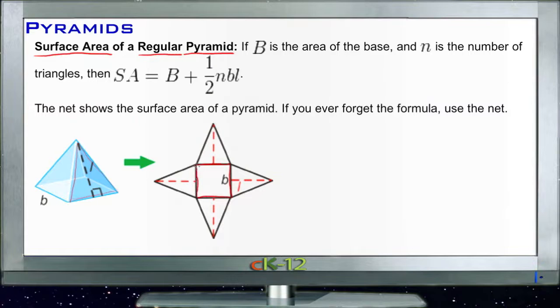So the formula is the surface area is equal to the base plus half of the number of sides multiplied by the base times the lateral length. Now that sounds a little confusing, perhaps a little complex, but really what we're doing is just finding the area of each of the shapes that make it up. So the area of the base is whatever shape forms the bottom of our pyramid.